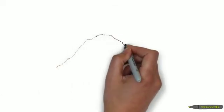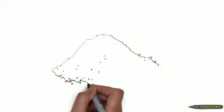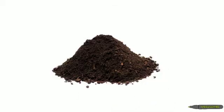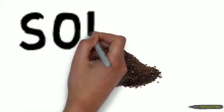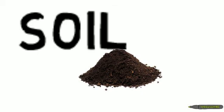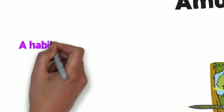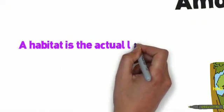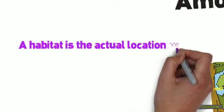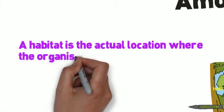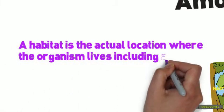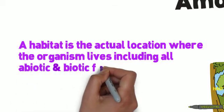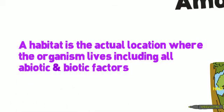The last example I'll discuss is soil. It is a non-living thing, but plants need nutrients within the soil for its own growth and development. Now that we've discussed what an ecosystem is, let's focus on a habitat. A habitat is the actual location where the organism lives, including all abiotic and biotic factors within it. So when you think of a habitat, think of where an organism lives.